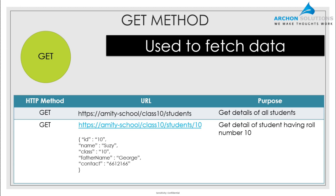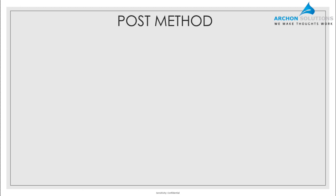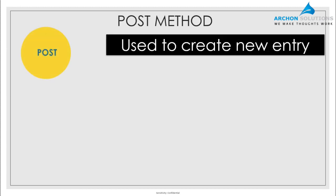By sending the HTTP method as GET, the back-end knows the front-end is trying to fetch information. In the response for the query fetching student with roll number 10, the front-end would get: id as 10, name is Suzy, belongs to class 10, father's name is George, and a contact number. There can be many other attributes, but these are taken as an example. This is how a GET method works.